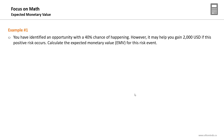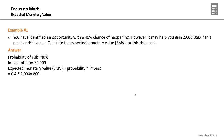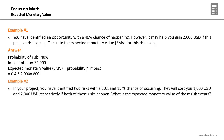A simple example: you have identified an opportunity with a 40% chance of happening that may help you gain $2,000 USD. Calculate the expected monetary value — simply multiply probability by impact: 40% × $2,000 = $800 USD. An important point: you need to give a positive sign for opportunities and a negative sign for threats in the EMV formula.